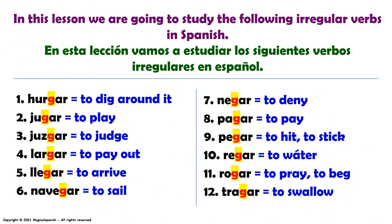En esta lección vamos a estudiar los siguientes verbos irregulares en español: 1. Hurgar, 2. Jugar, 3. Juzgar, 4. Largar, 5. Llegar, 6. Navegar, 7. Negar, 8. Pagar, 9. Pegar, 10. Regar, 11. Rogar, 12. Tragar.